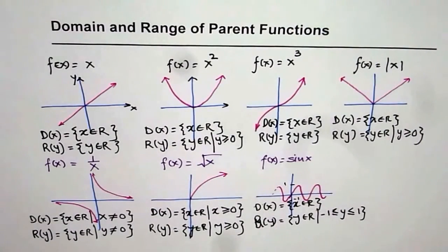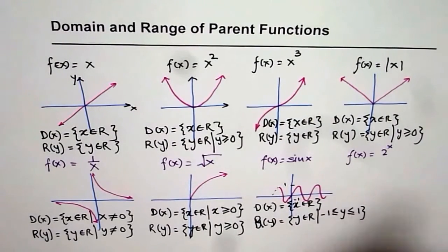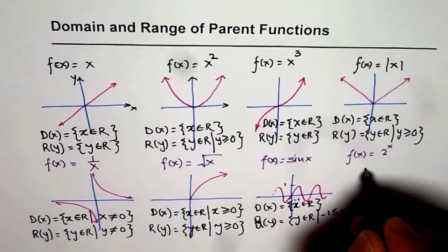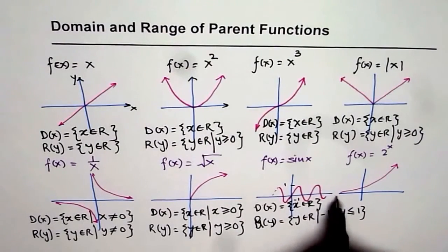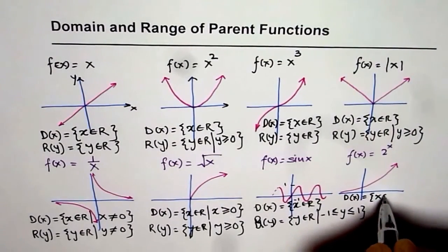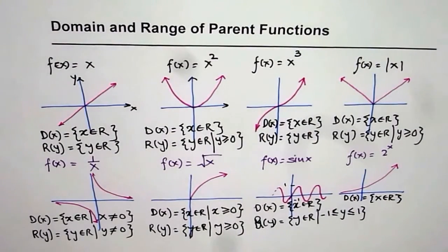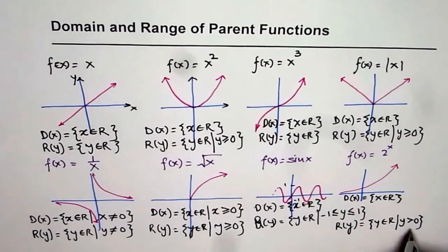Now let me take one more function, which is an exponential function: f of x equals to 2 to the power of x. Sketching the graph, it is always increasing. If x approaches minus infinity, the function approaches 0 but is never 0. Domain d of x equals x belongs to real numbers — there is no restriction on the domain. However, on the range there is a restriction: range equals y belongs to real numbers, but y is always greater than 0, not even equal to 0.